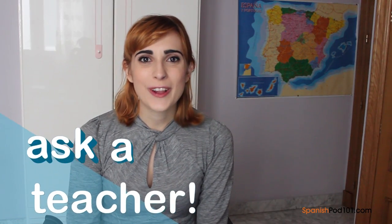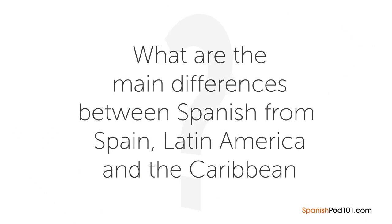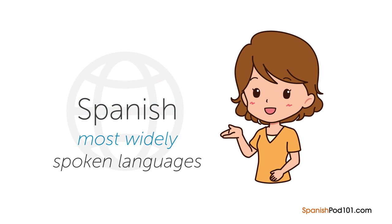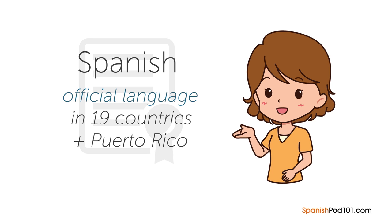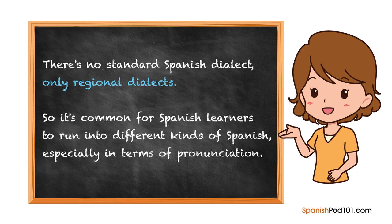Hi everybody, I'm Rosa. Welcome to Ask a Teacher, where I'll answer some of your most common Spanish questions. The question for this lesson is: what are the main differences between Spanish from Spain, Latin America, and the Caribbean? Spanish is one of the world's most widely spoken languages — the official language in 19 countries as well as Puerto Rico. It's so widespread because of Spanish colonial history, during which Spanish mixed with native regional languages.